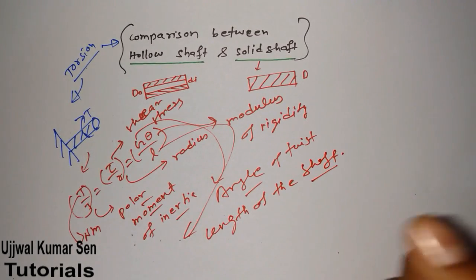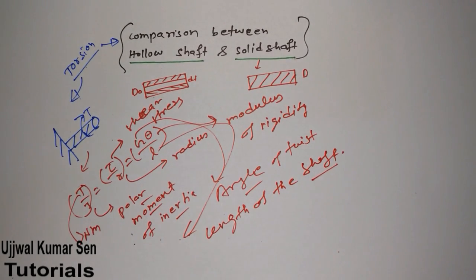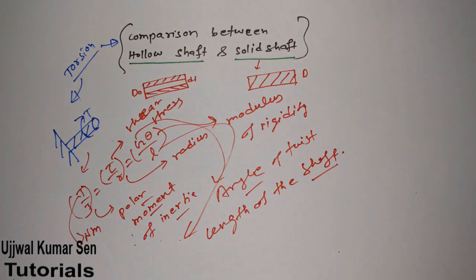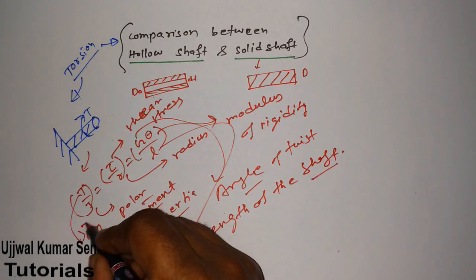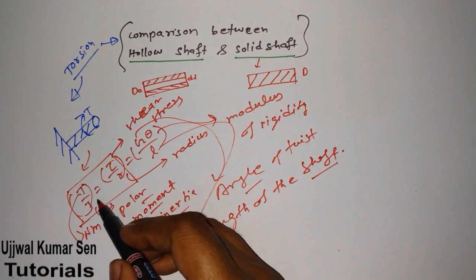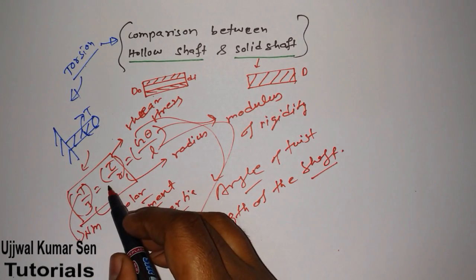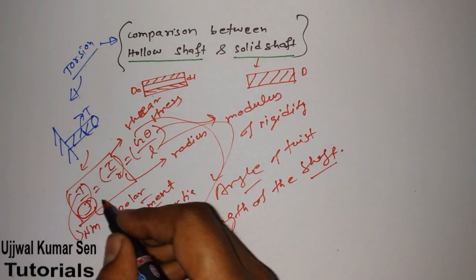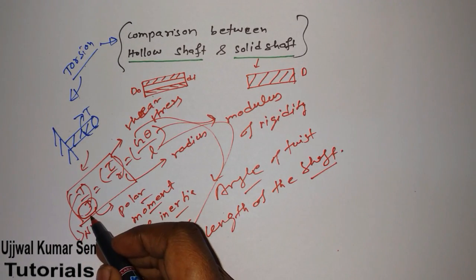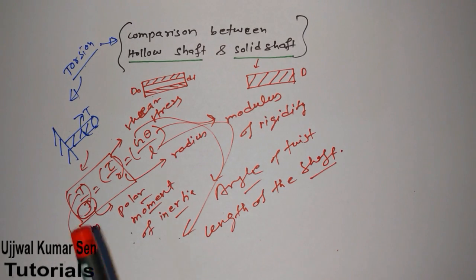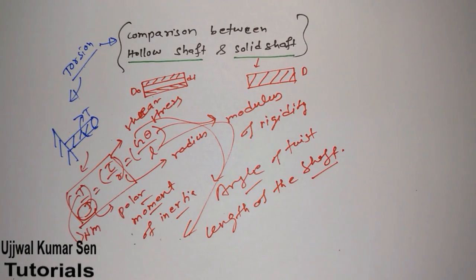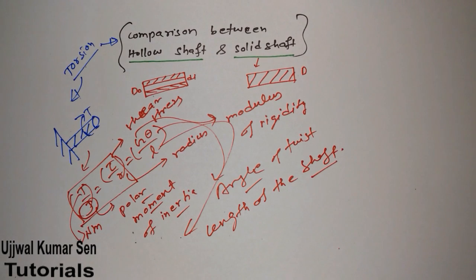L is the length of the shaft. This is all happening because of the twisting moment. Now, what exactly we are going to do here — we are going to use the first two parts of this equation only, because we will compare using J, which is the polar moment of inertia.